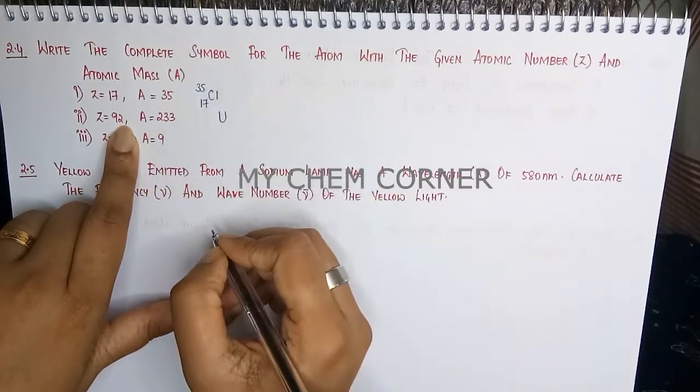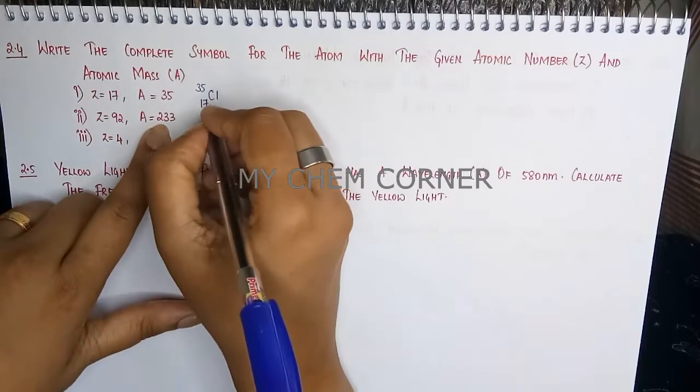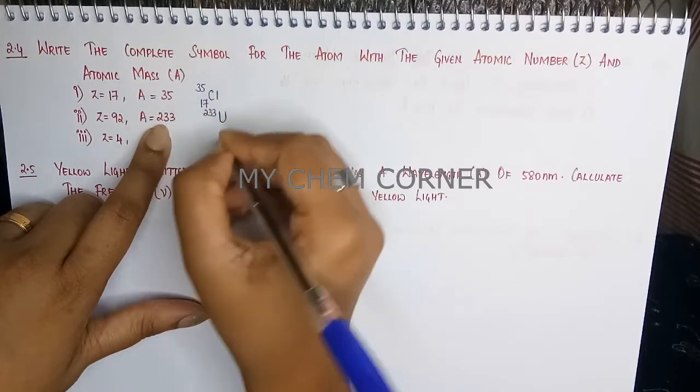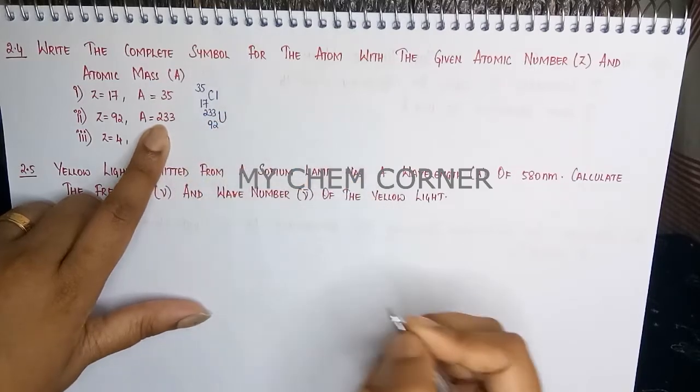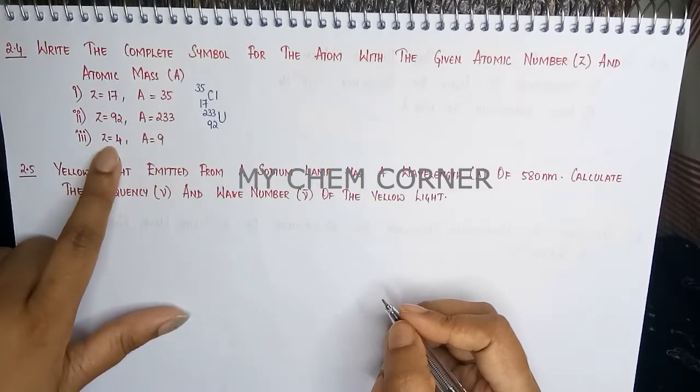The next one is with an atomic number 92. Your atom is uranium. Now uranium, atomic mass is 233, mass number is... atomic number is 92.